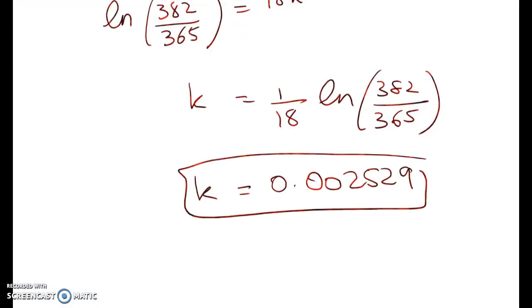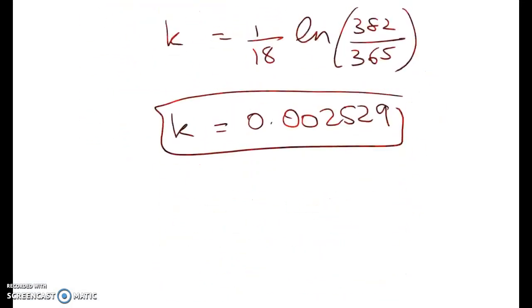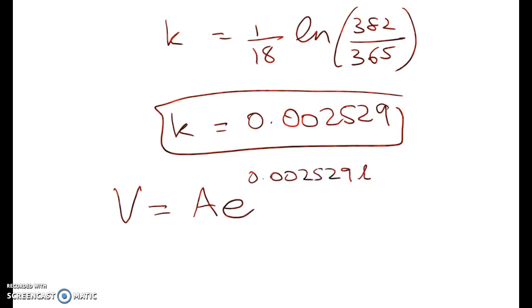Right so that's my first constant. I take that and I put it back into my differential equation which is giving me this. So v is equal to A e to the kt. So it's 0.002529t. Right so we're just about finished.